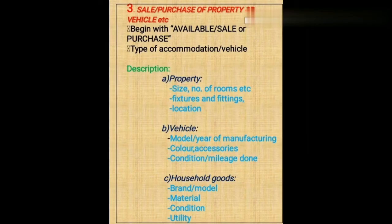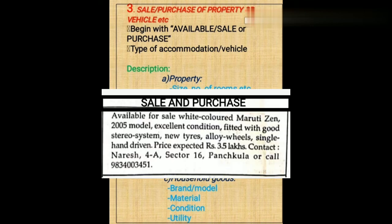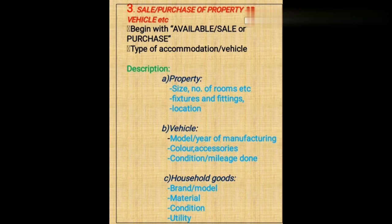The third category includes so many sub-categories: property, vehicle, and household goods. If we have to sell an apartment or land, we categorize it under property. If you want to sell a vehicle — used or new — you have to mention those details. For household goods like a fridge, TV, or bed, or any other item, you follow this particular category of classified advertisement. The main thing is that the content should be very clear.